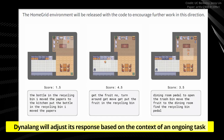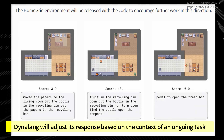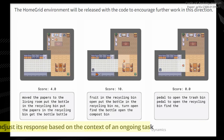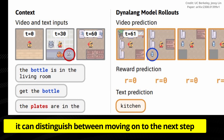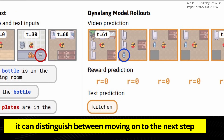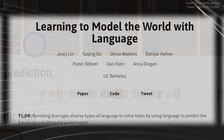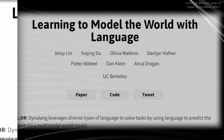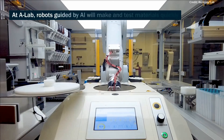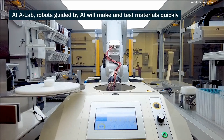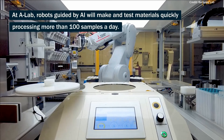It's important to note that Dynalang has already developed impressive capabilities in comprehending both language and environmental cues. This breakthrough is largely thanks to its proficiency in predicting future outcomes, an advancement that has massive implications for the way humans will communicate with AI-powered bots.